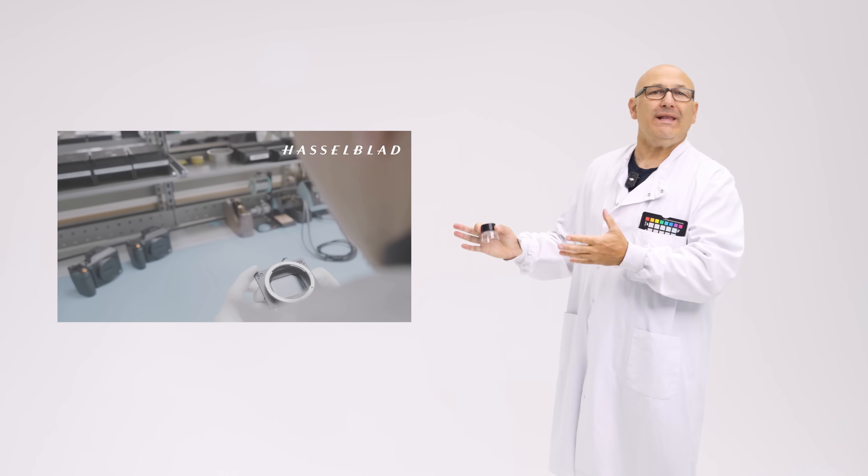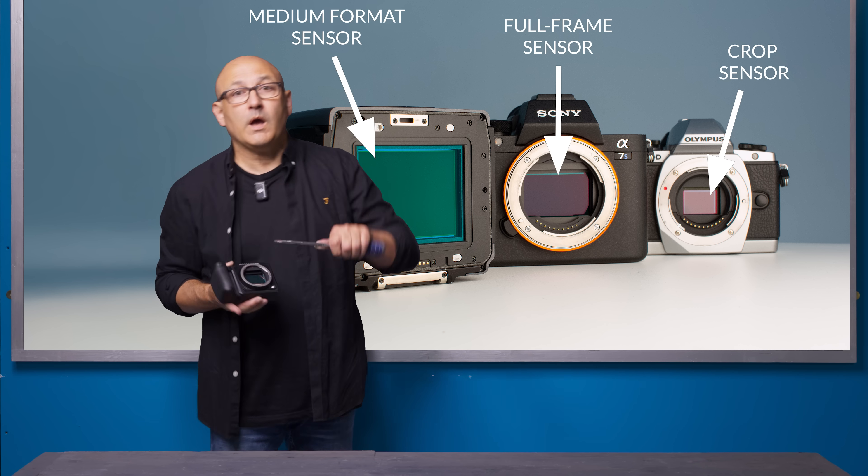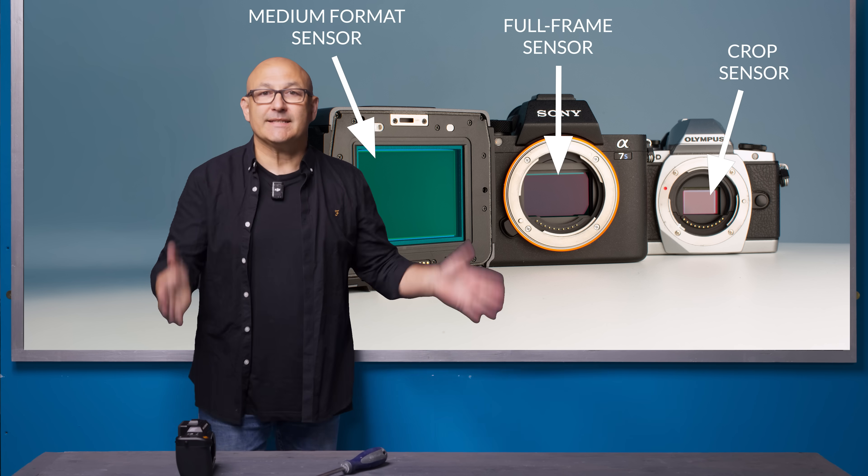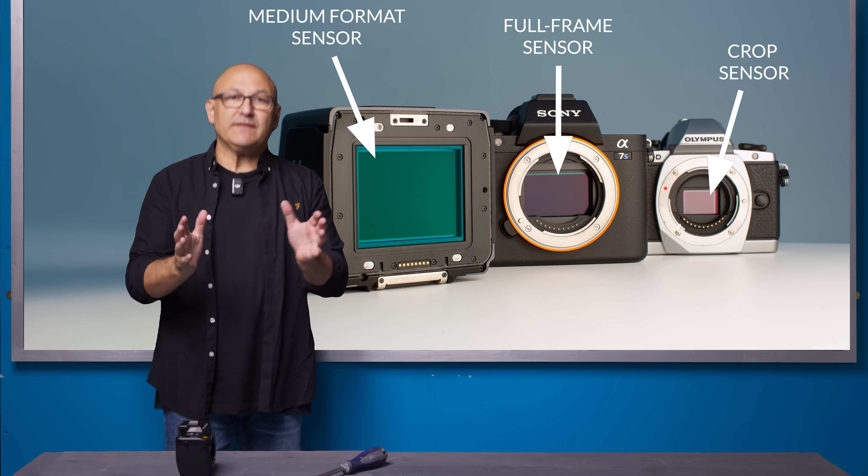But we don't change film in our cameras anymore, so how can I get a different ISO when there is only one sensor in the camera? Good question.